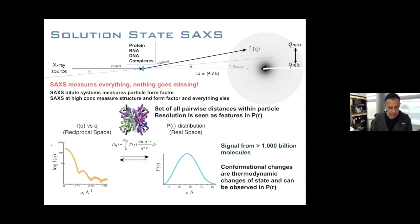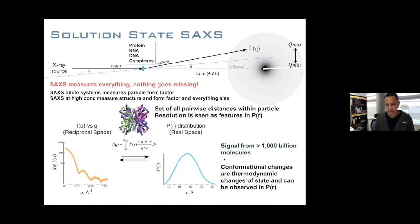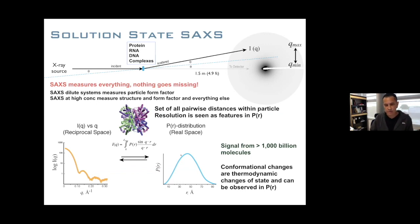We want to work under sufficiently dilute conditions so that the shape of the scattering curve remains constant. The scattering curve is measured in reciprocal space, and via a Fourier transform inversion we can recover the real space signal — the pair distance distribution function P(r). This is the set of all pairwise distances within the particle. Because you're measuring roughly a thousand billion molecules, it's effectively a conformational landscape of your protein.